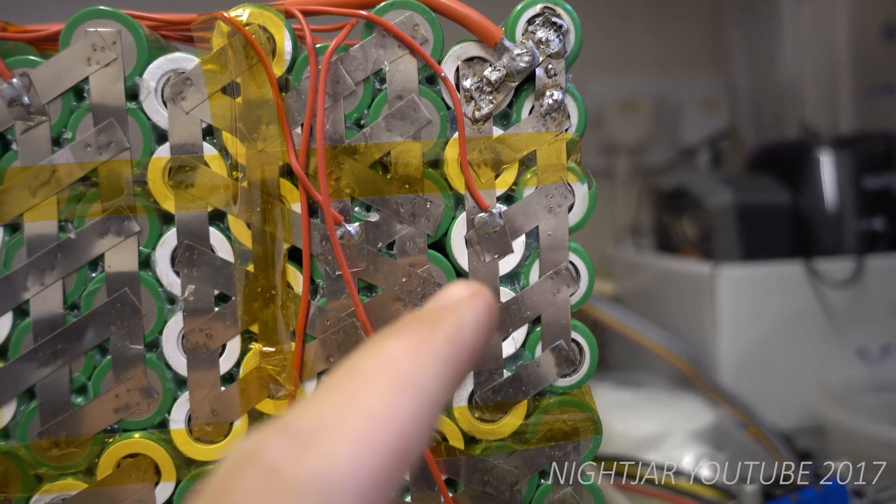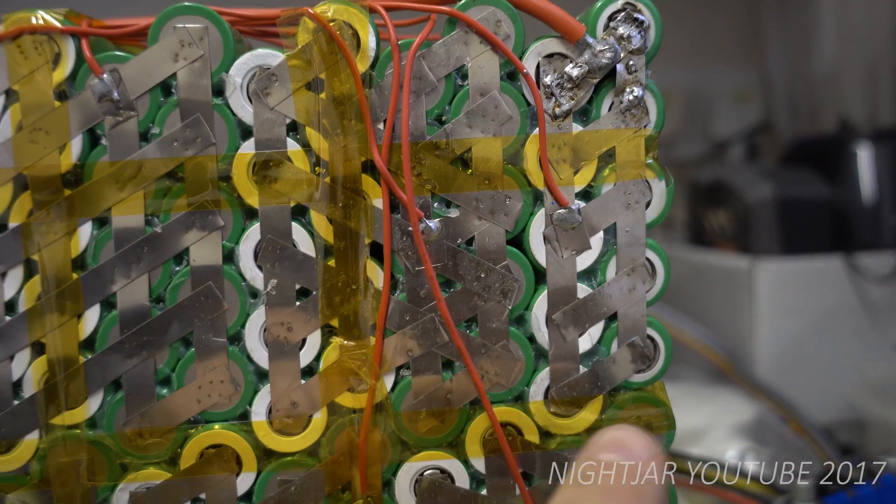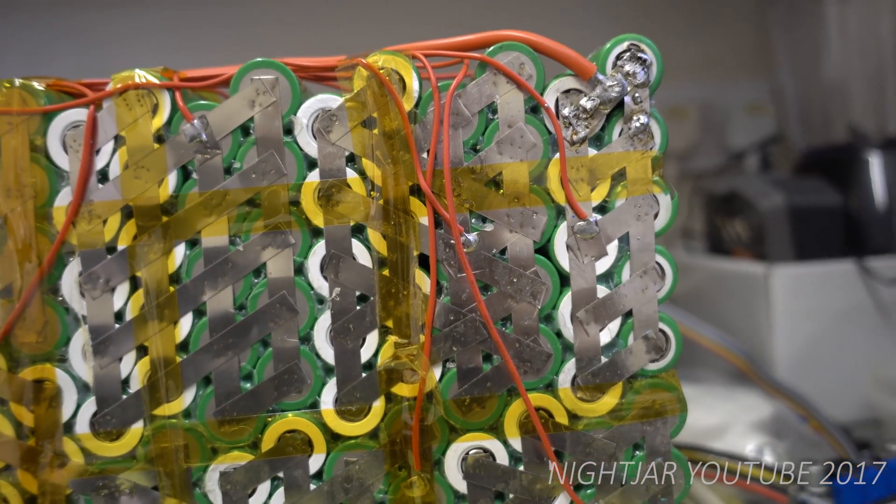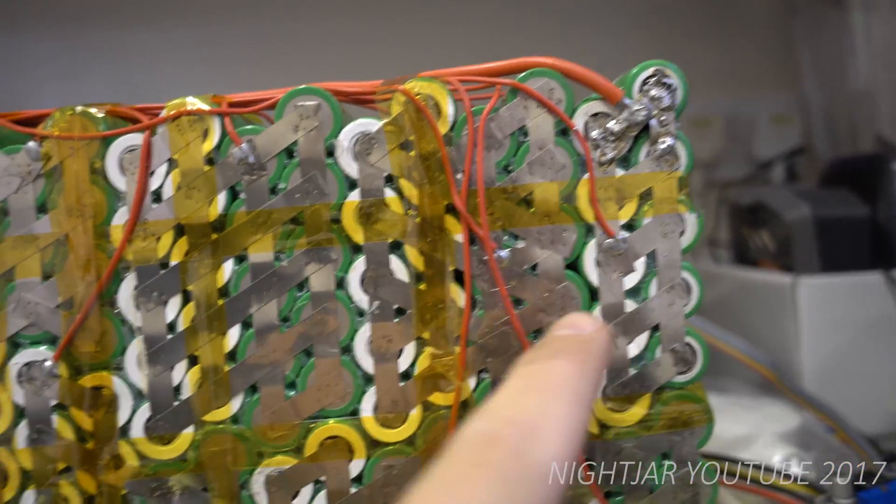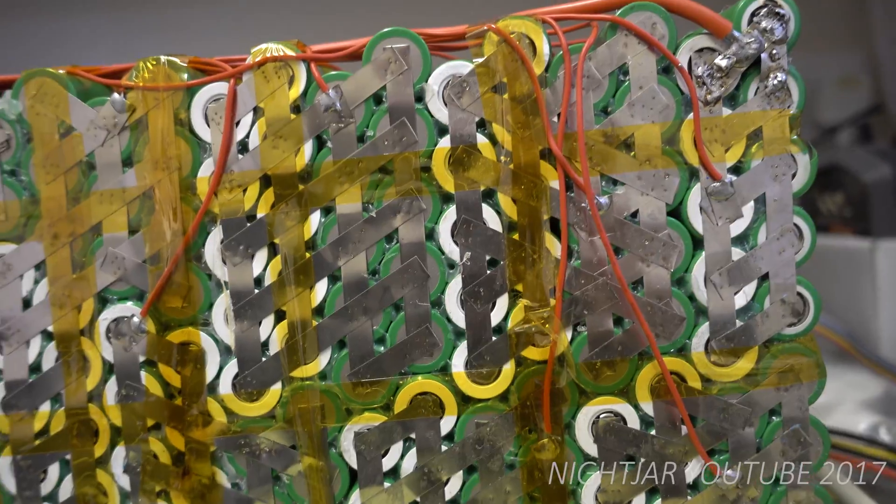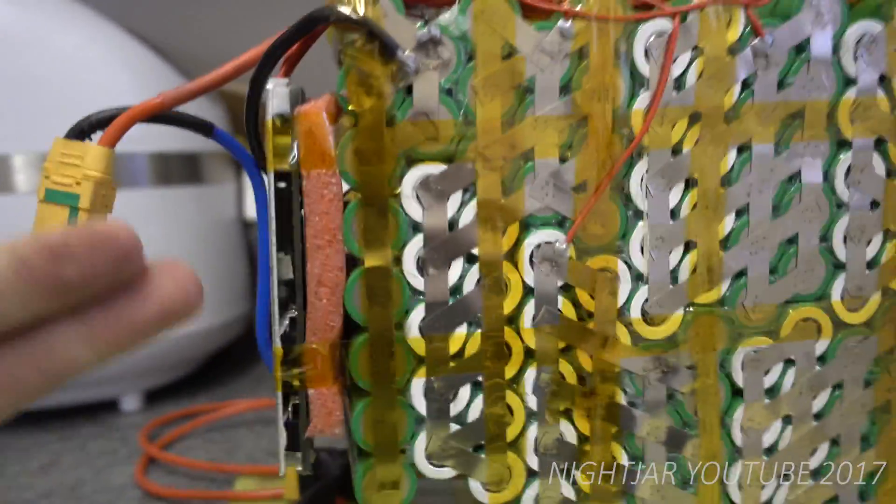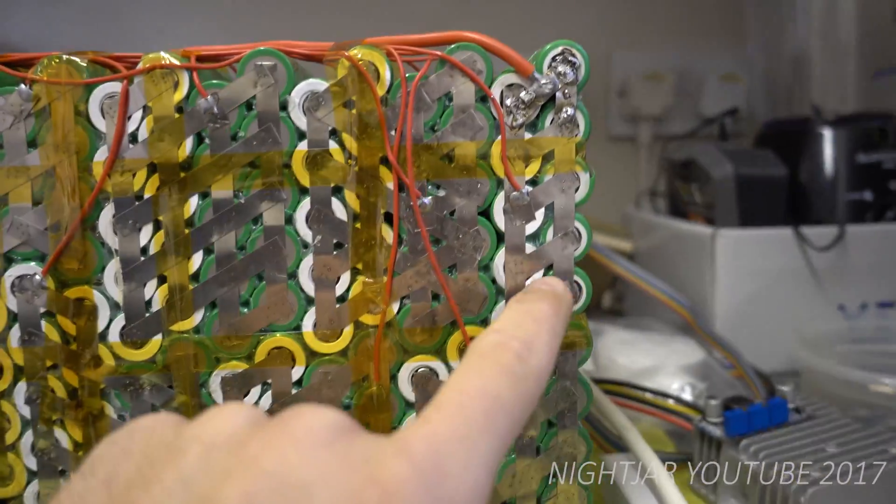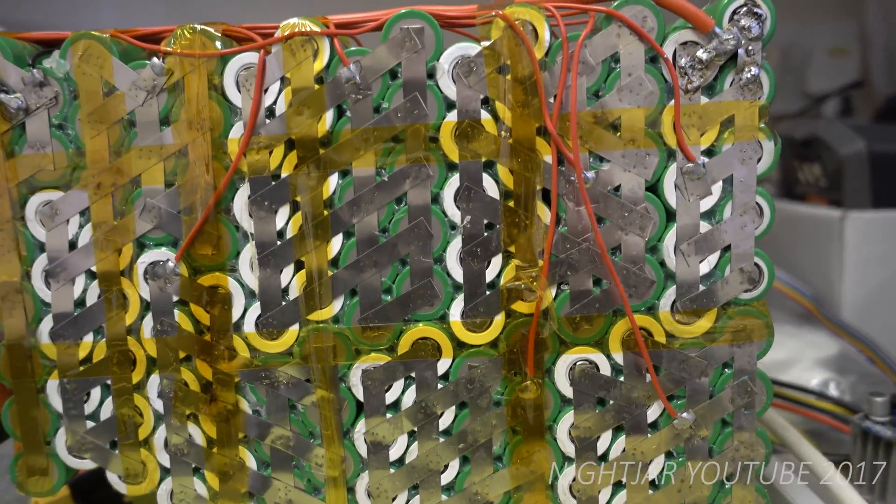But up here, I started to have problems with this parallel pack. The voltage on this pack was dropping, I couldn't work out what was going on. This pack was losing energy faster than the other packs. So my initial thought was the BMS is doing something wrong here, that the BMS has got a faulty balancing resistor and it's bringing this pack down lower than it should.